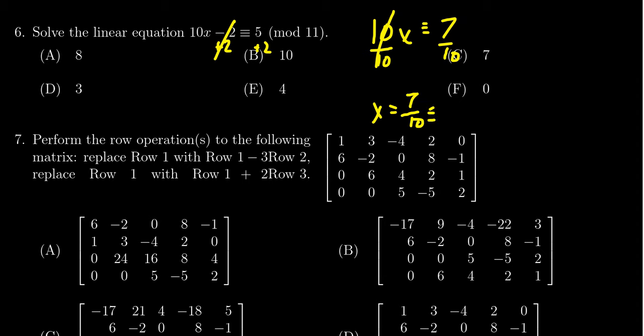If I add 11 to the numerator, you get 7 plus 11 which is 18 over 10. Now while 10 doesn't divide into 18, 2 does.